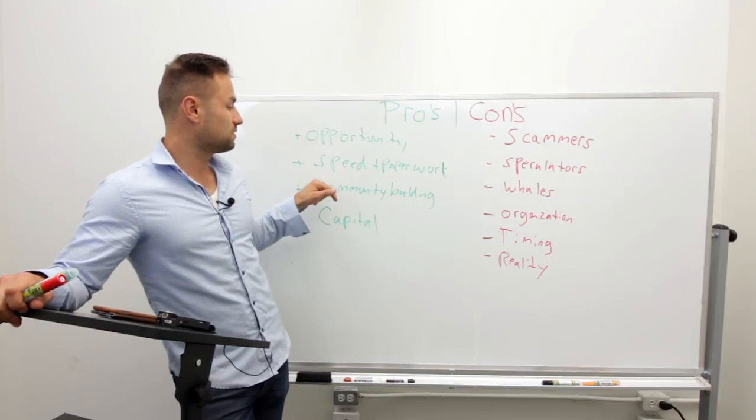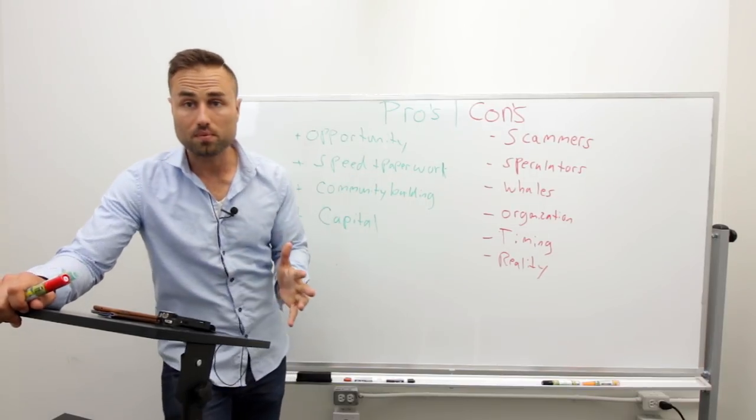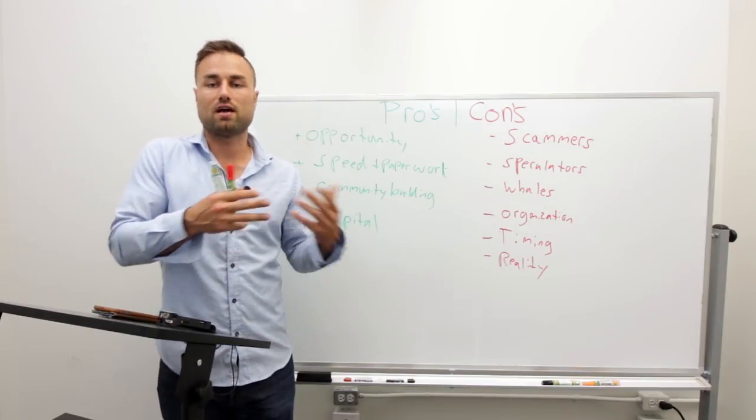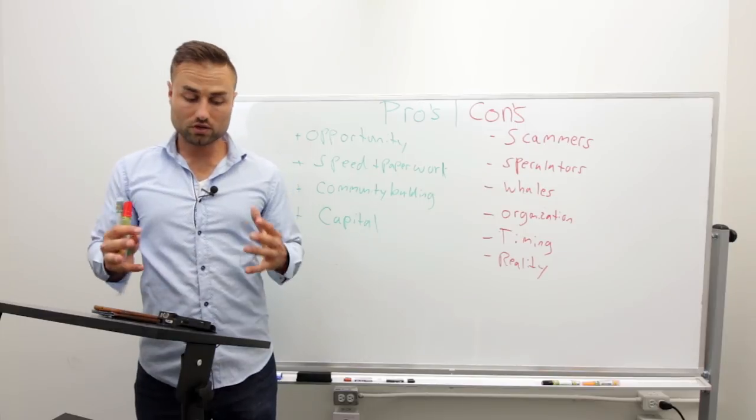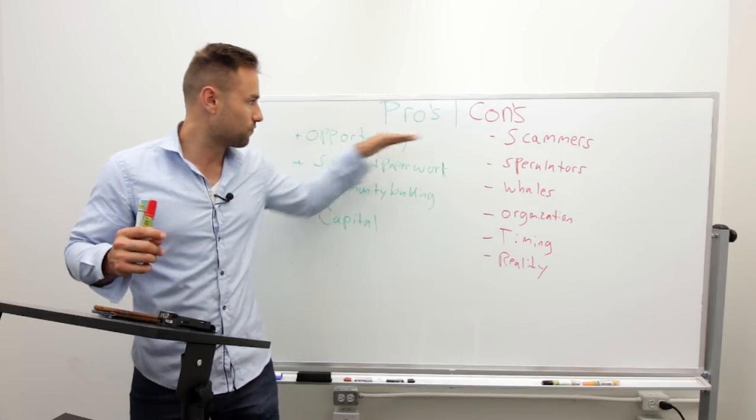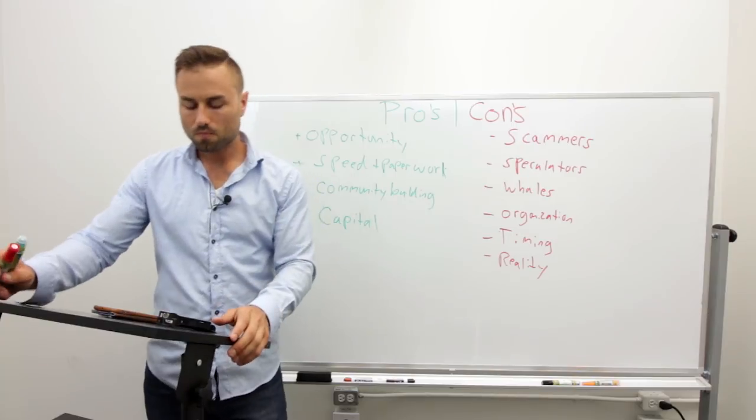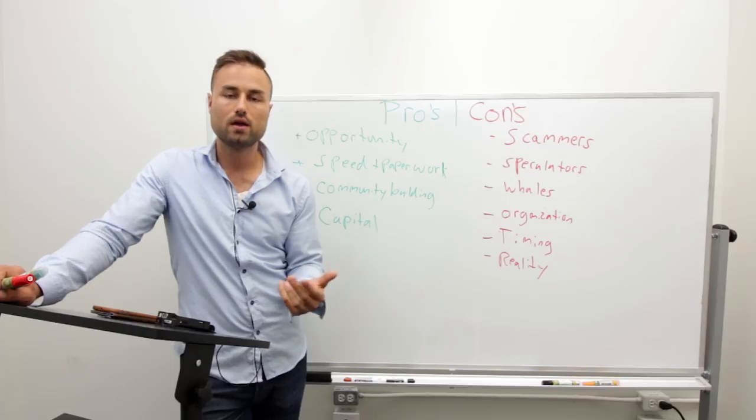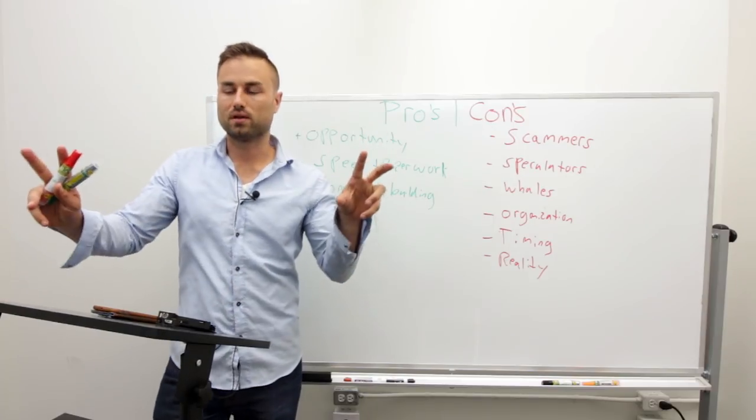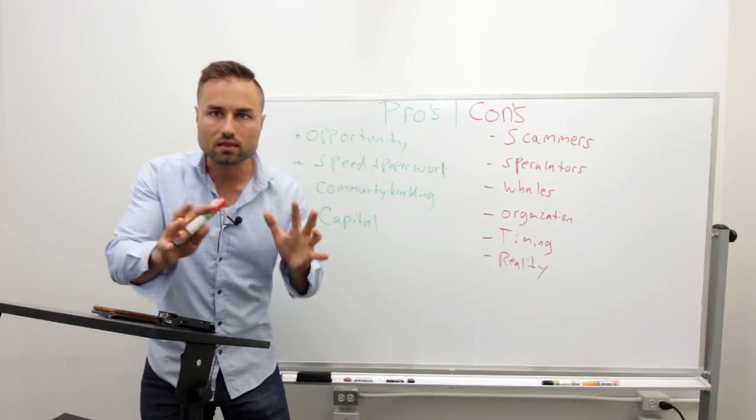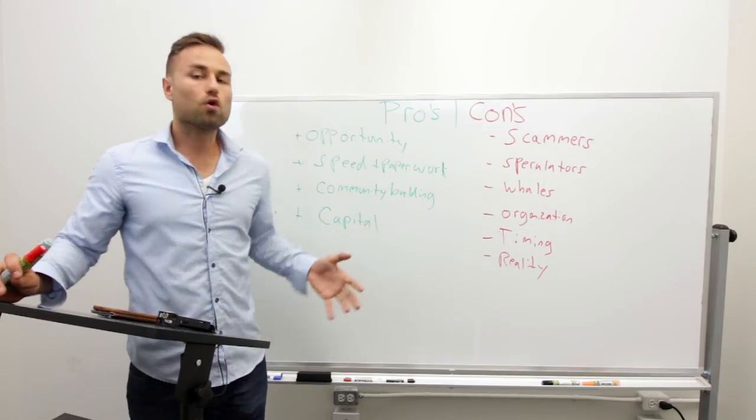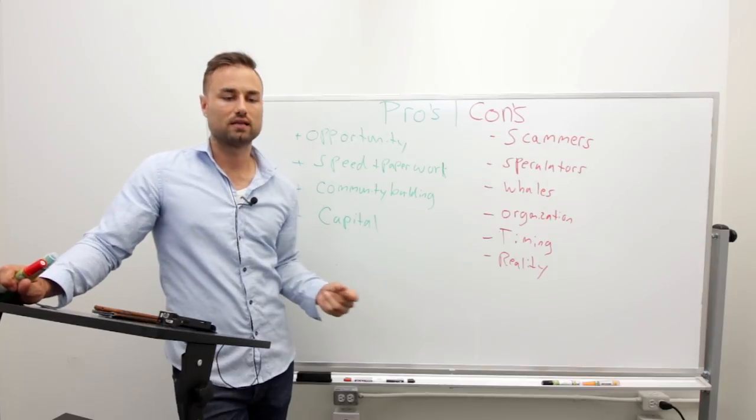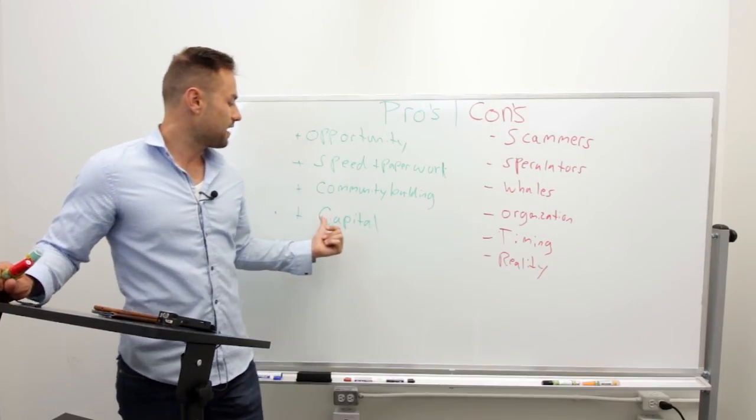So for an ICO, pretty much all these days, what it takes is a white paper, even though I don't agree with that. I believe you should have more than a white paper. You should have a demo product. You should have a working alpha, at least an alpha product, and showing your community before you do an ICO, as opposed to just a white paper. Second one is paperwork. So if you haven't raised capital yourself in the past, the actual legal paperwork for setting up your corporation, setting up your holdings account, setting up your term sheet for raising, that may cost you on average $15,000 or so.